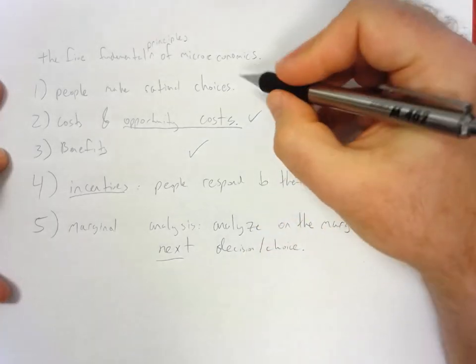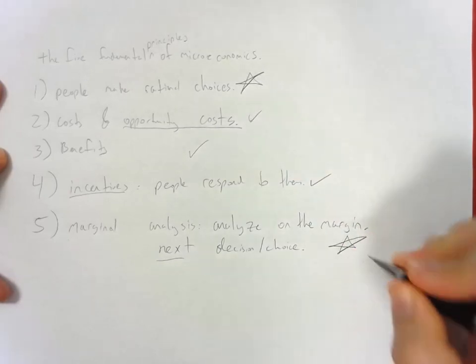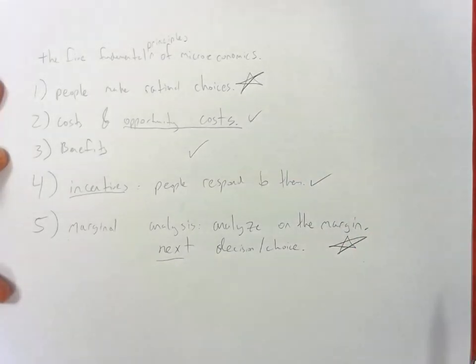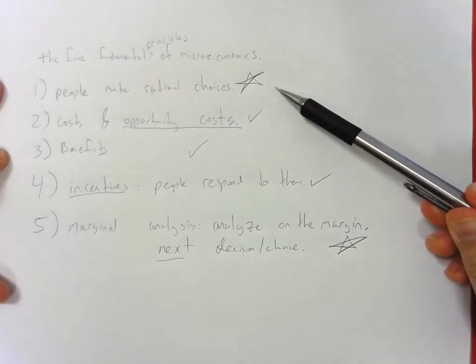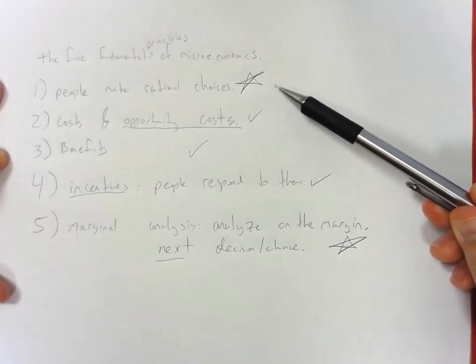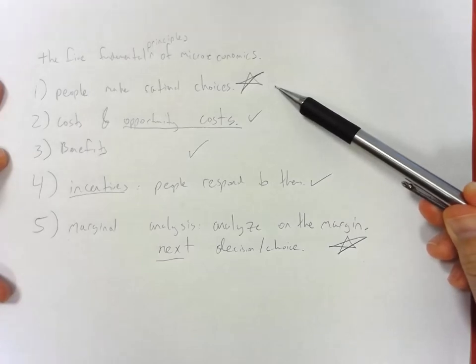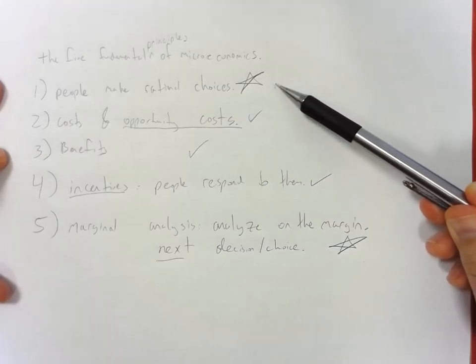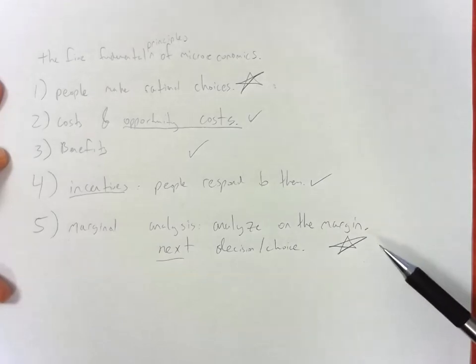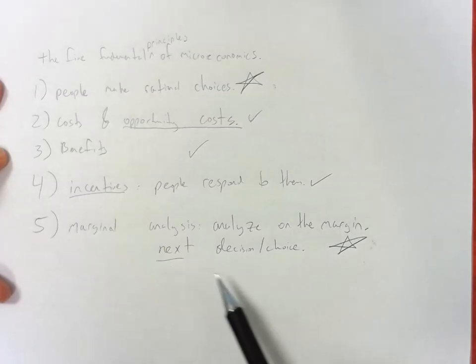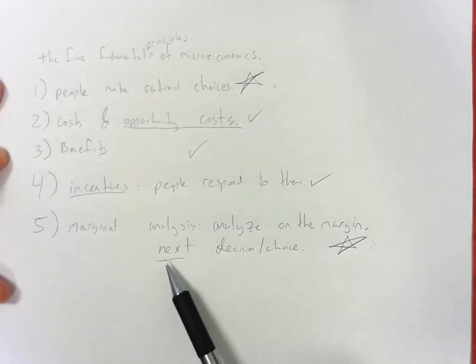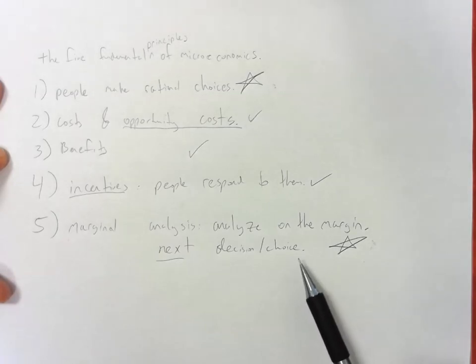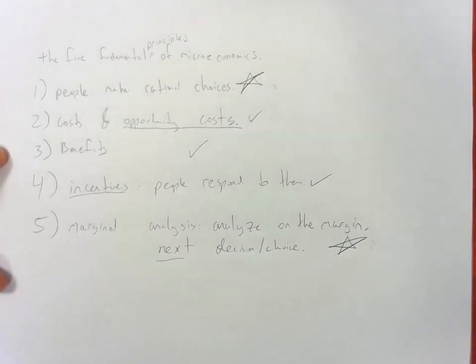I would say the two things you need to focus on here, that you may not be enjoying about being in an economics class, is that one, people make rational choices. It's okay to not agree with that. But for the purposes of most econ courses, if you argue or think about this too much, it's going to make it difficult. And then five, the fact that we analyze things on the margin. So, we're always looking at the next decision. The next choice that we make. That's the one that's going to be important. And that's how we determine whether we're being efficient, and that we're optimizing the use of our resources.